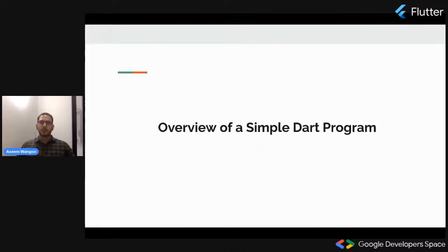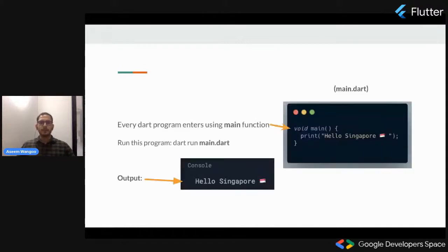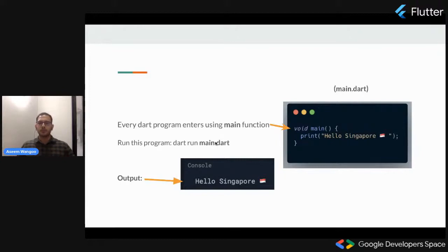Let's see what a simple DART program looks like. Every DART program enters using a main function, as you can see on the right-hand side. This file is called main.dart. If you want to run this program, you simply call dart run and the name of your file, which is main.dart. The output is Hello Singapore, as specified in the print statement.